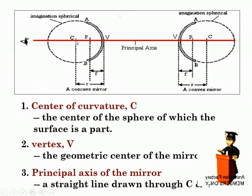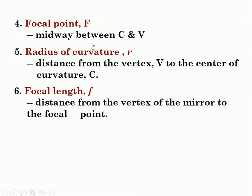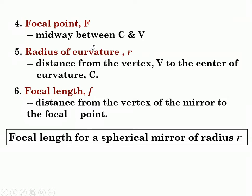This point is the center of curvature, capital C. Vertex is capital V. Capital F is the focal point — the position midway between the center of curvature C and the vertex V. Radius of curvature, small r, is the distance from the vertex V to the center of curvature. Focal length, small f, is the distance from the vertex to the focal point. The focal length of a spherical mirror of radius r is half of it: f equals r over 2. Remember, this is focal length, small f.